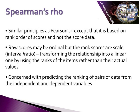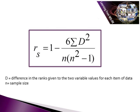Spearman's rank is concerned with predicting the ranking of pairs of data from independent and dependent variables. The equation for Spearman's rank uses D, which is the difference in the ranks given to the two variables for each item of data, and N, which is the sample size.